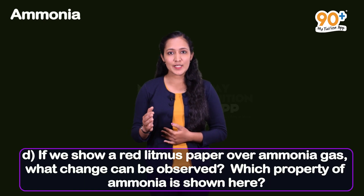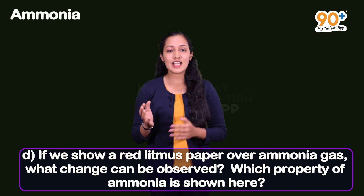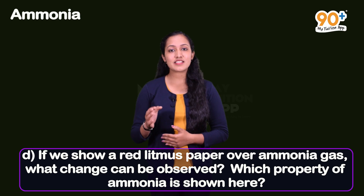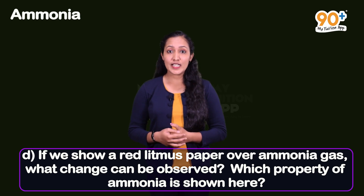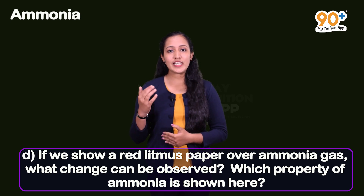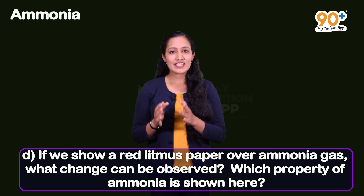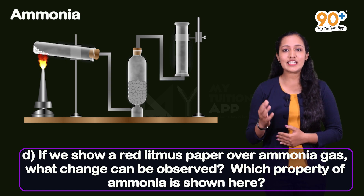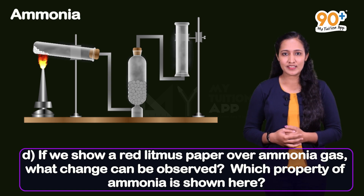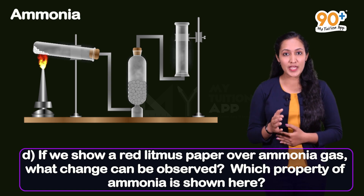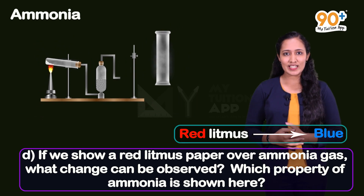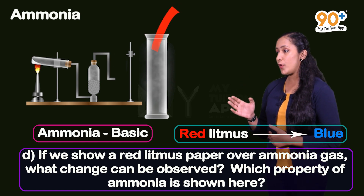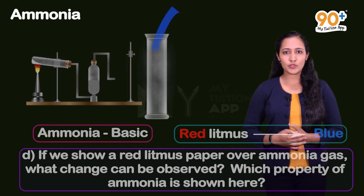Now the D question: if we show red litmus over ammonia gas, what change can be observed? Which property of ammonia is shown here? We need to find the color change when red litmus paper is held over ammonia. We already learned that a base turns red litmus blue. Since ammonia is a base, red litmus held over ammonia turns blue.